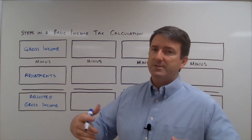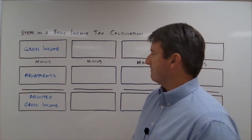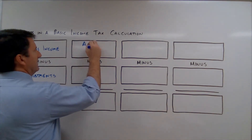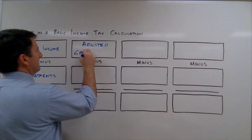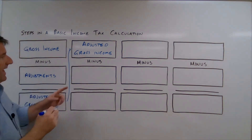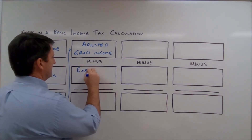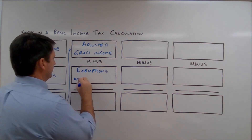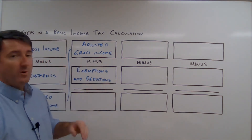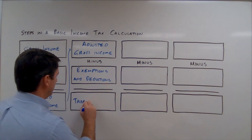Remember, these adjustments will generally be contributions to a tax-deferred savings plan. Then we take our adjusted gross income and subtract our exemptions and deductions. From our adjusted gross income, subtracting exemptions and deductions gives us our taxable income.